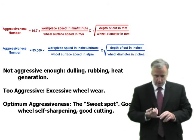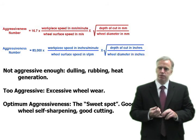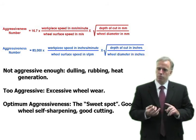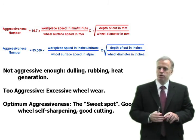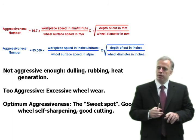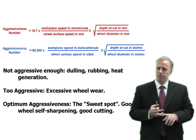This technique I've found has worked miracles in terms of, once you get the aggressiveness number that works well for your wheel, use it, and boom, you can choose grinding parameters immediately. That'll put you in the ballpark or very close to that sweet spot for that wheel.